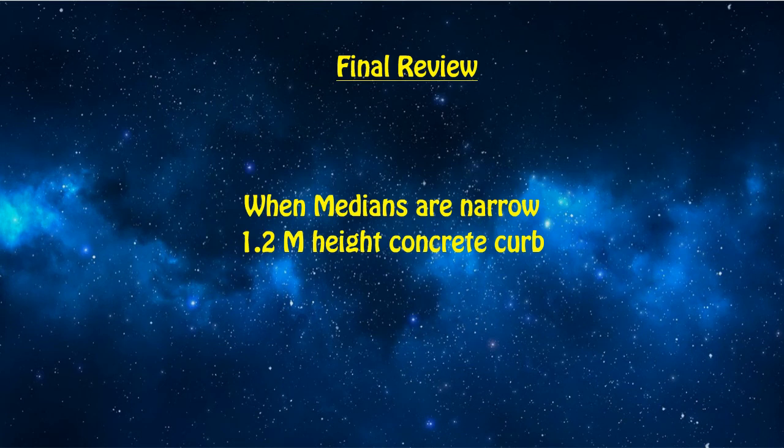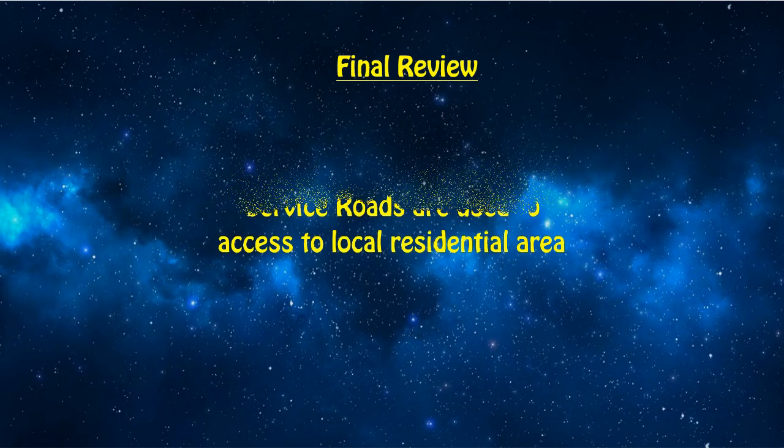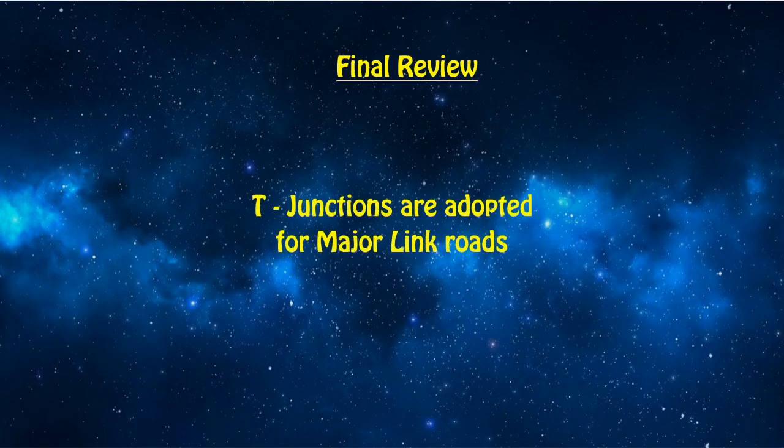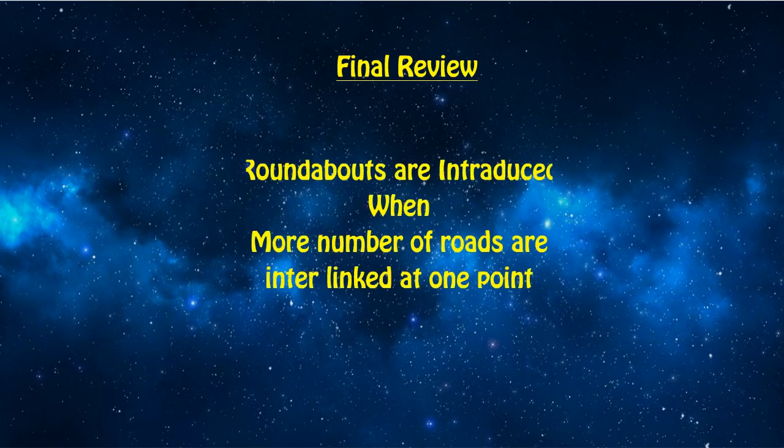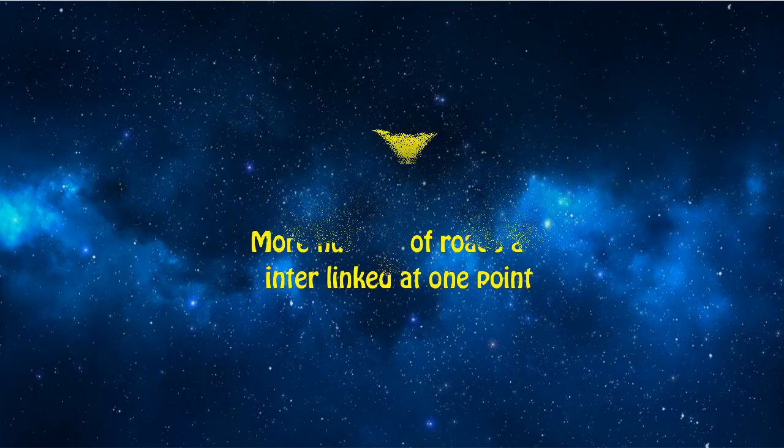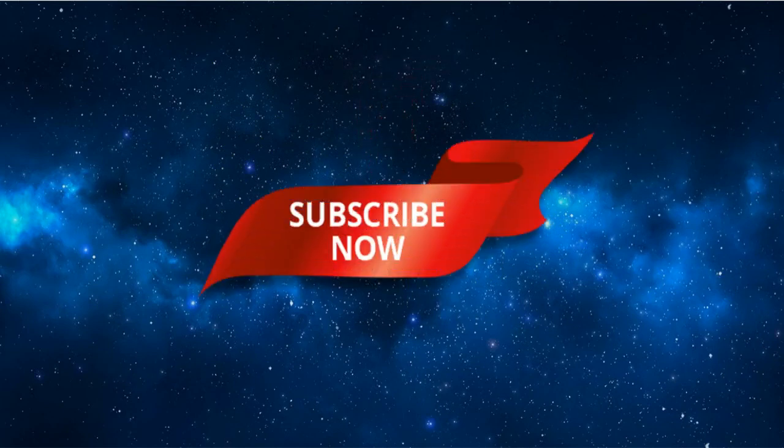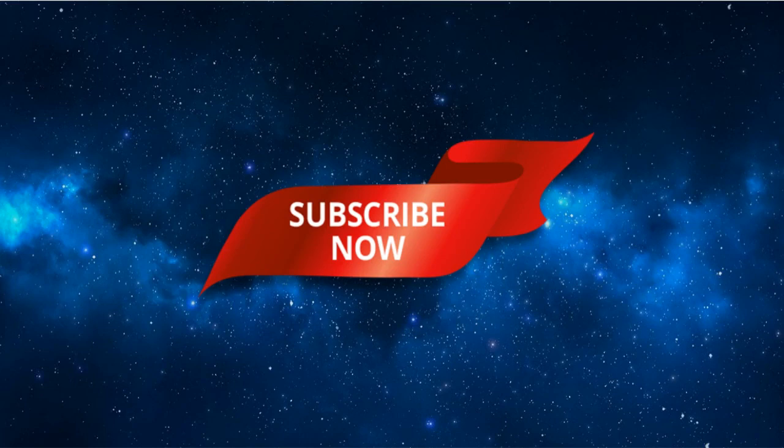Where the median width is narrow, there minimum 1.20 meters height concrete curbs shall be used. The service roads are used to access to the residential area for local traffic. Where major roads are connecting with highway, there the T-junctions are developed for clear vision and smooth access to the major roads. When more than one major road is connecting at the same point, there roundabouts are introduced to control the traffic. If you like this video, please subscribe now and also share with your friends. Thank you.